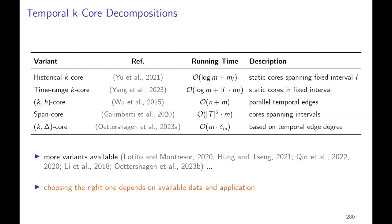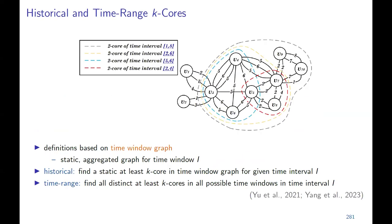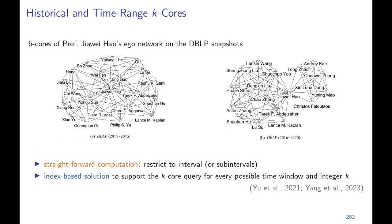Let's look first at the historical K-core and time range K-core, which are based on the time window graph — a static aggregated graph that only contains edges appearing in the time window I. In the historical case, we just find an at-least-K-core in the time window graph. For the time range K-core decomposition, we want to find all distinct K-cores in all possible time windows in time interval I, so we possibly have to construct a quadratic number of sub-time intervals. A use case example shows six-cores of Professor Jawe Hahn's co-author network in the DBLP dataset, with the first snapshot for the time interval between 2011 and 2015.